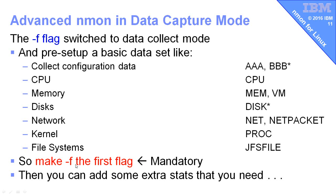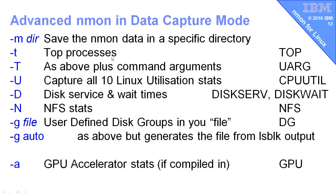You want to make minus F the first flag on the line — it will set all these up and then you can add extra flags to switch on extra things. Minus M specifies a directory, getting NMon to move to a specific directory before saving the file. Minus T switches on the top processes, which can add a significant amount of extra data into the file if you've got tens of thousands of processes running. Minus U is the same as top processes but also saves the command line arguments — that can be useful if, for example, database processes are the same binary but the command line arguments tell you which is the log writer and which is the query daemon.